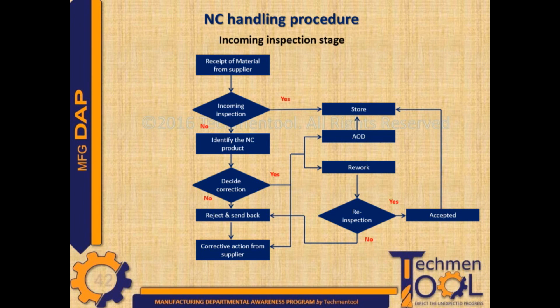Correction is of two types: either rework or accept under deviation. After rework, the goods go back for re-inspection. Again, if any NC is observed during the re-inspection process, then the goods will be rejected and sent back to the supplier.